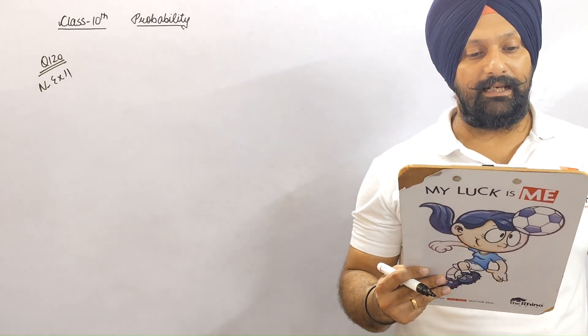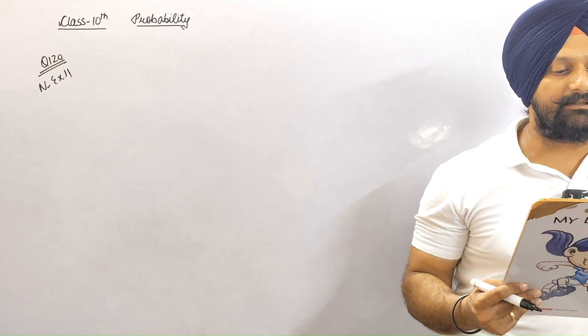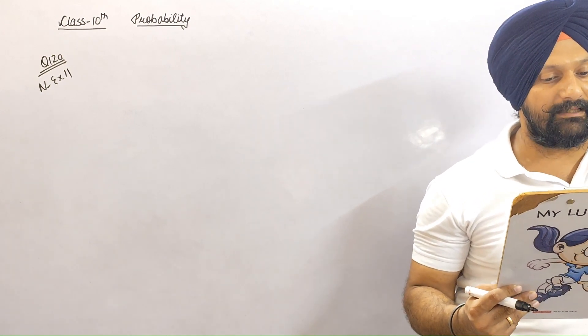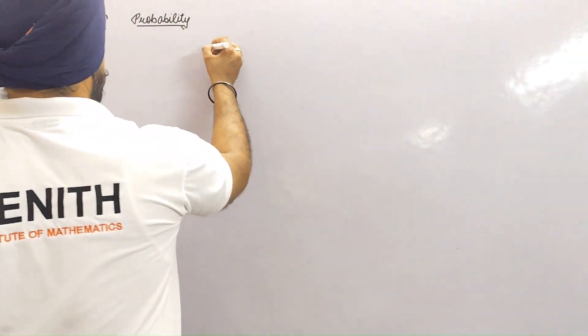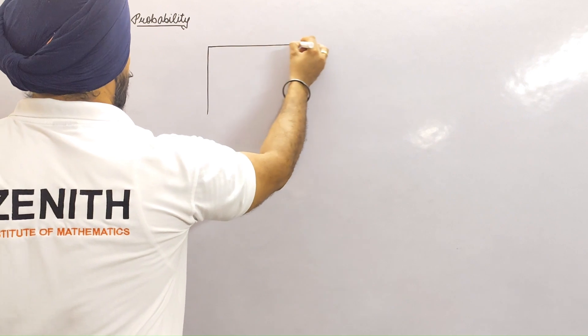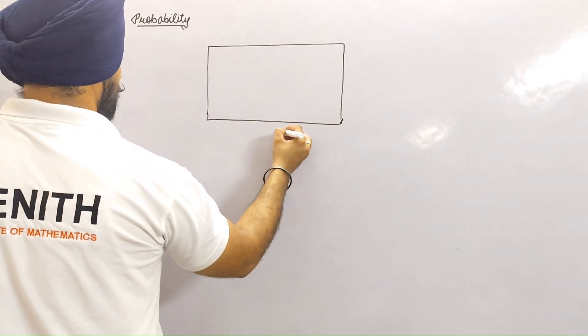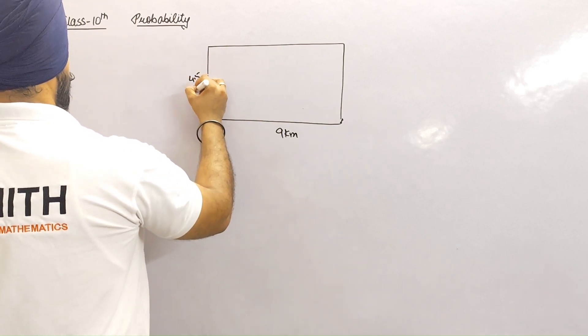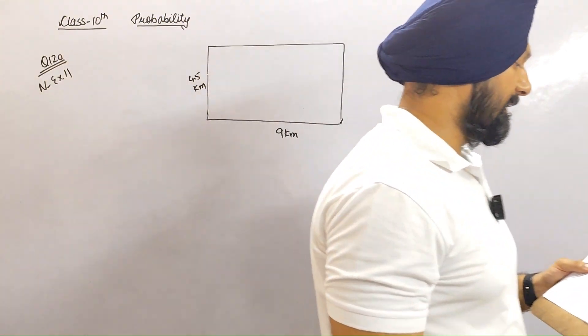Yes everybody, example number 11, a very important question. It says a missing helicopter is reported to have crashed somewhere in the rectangular region shown in the figure. This rectangular region is 9 km long and its breadth is 4.5 km. What is the probability that